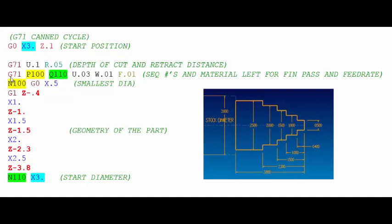Alright so in the second G71 line is where we start with two sequence numbers and I've highlighted those sequence numbers so that you can see why they're there. Alright so the P100 refers to the first line of our geometry and the Q in green here is referring to the last line of our geometry.